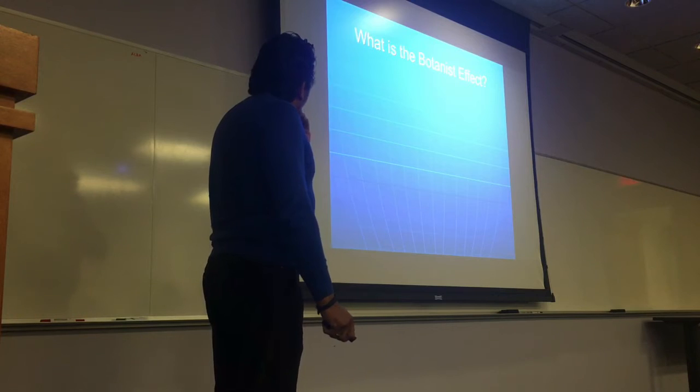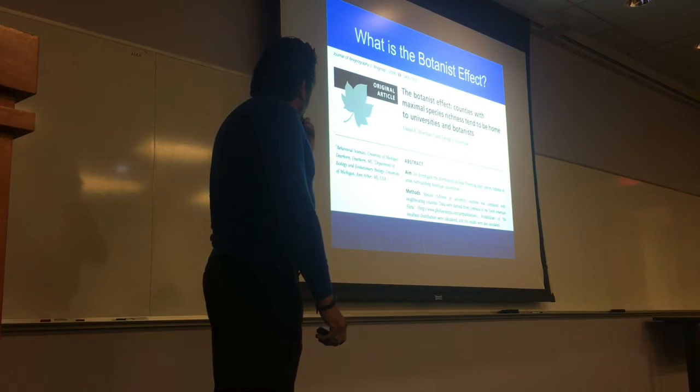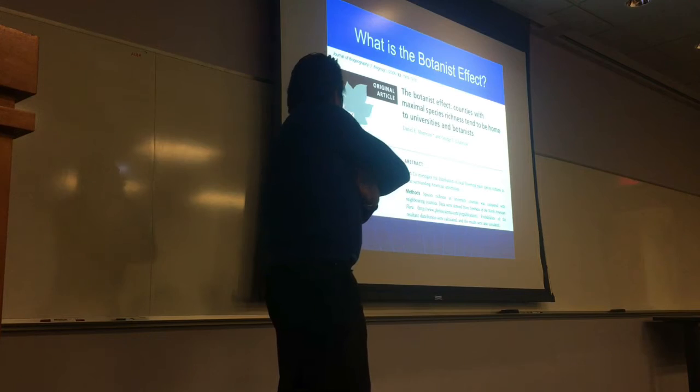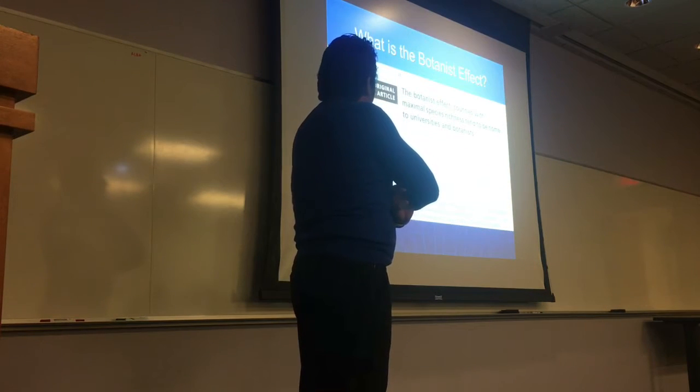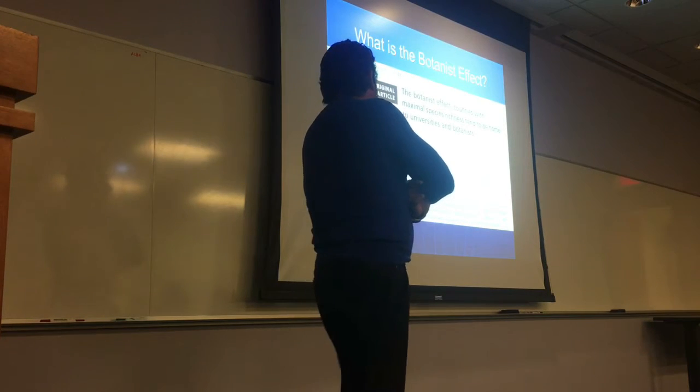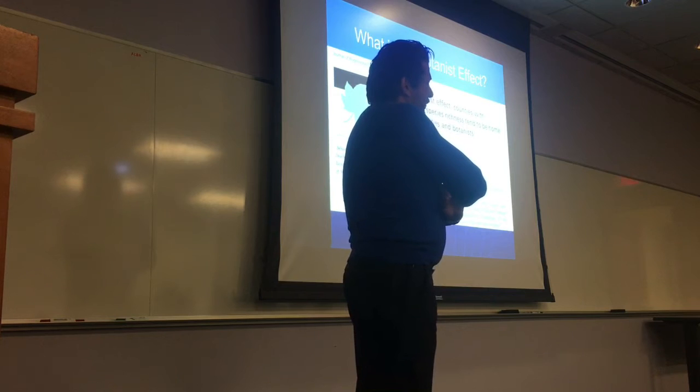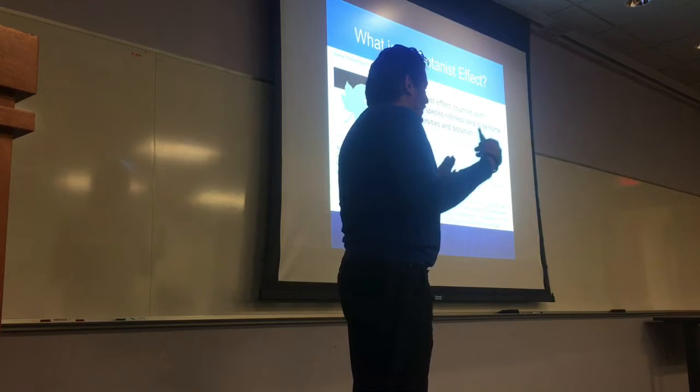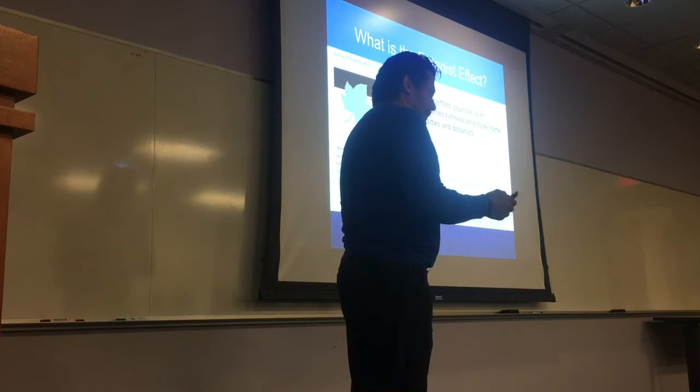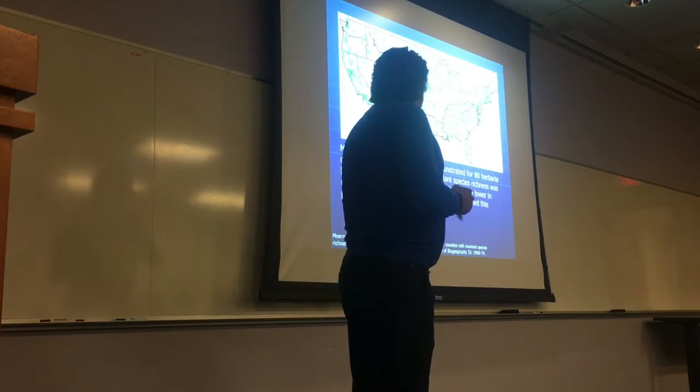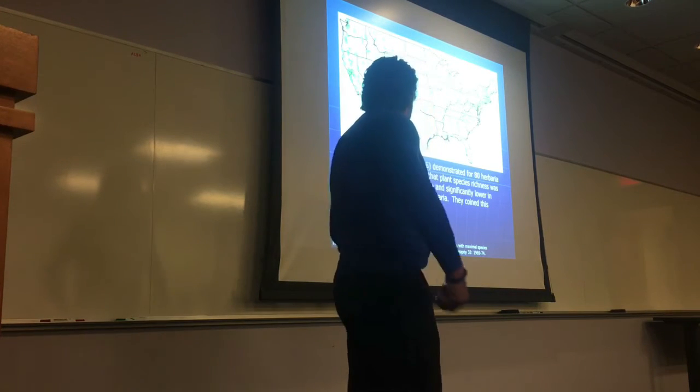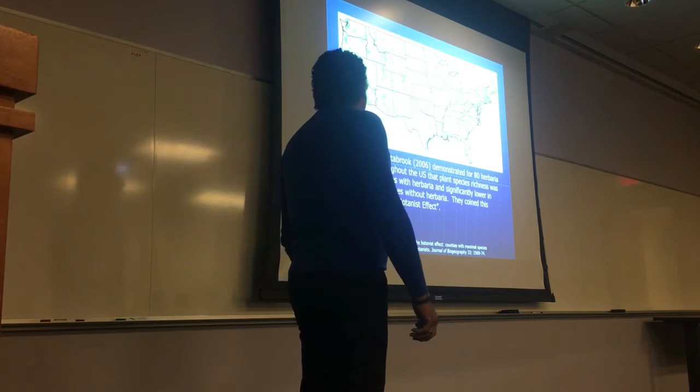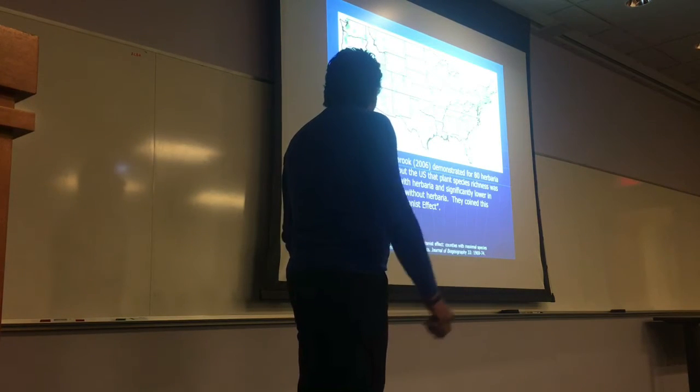Anyway, so let's just jump into this. What is the botanist effect? So a paper that was written about 12 years ago by Mormon and Estabrook defined the botanist effect that counties with maximal species richness tend to be home to universities and botanists. In their argument, they're basically saying that species richness is highest in counties that have a university with a botanist. Again, suggesting that the species richness is high because botanists are out there collecting species richness. So in this, the botanist effect.